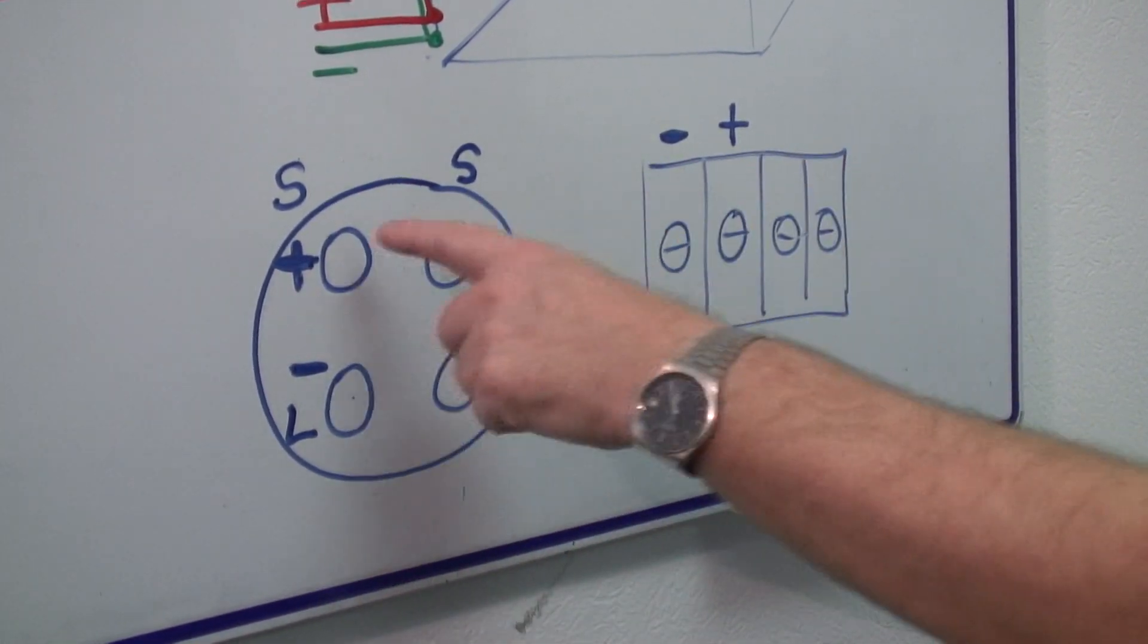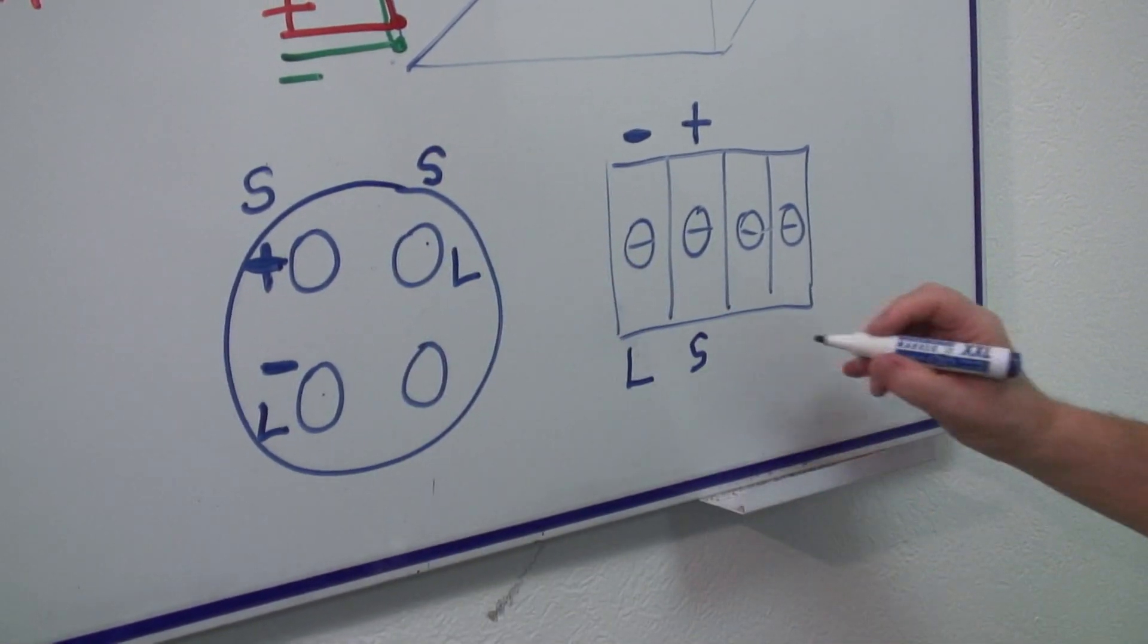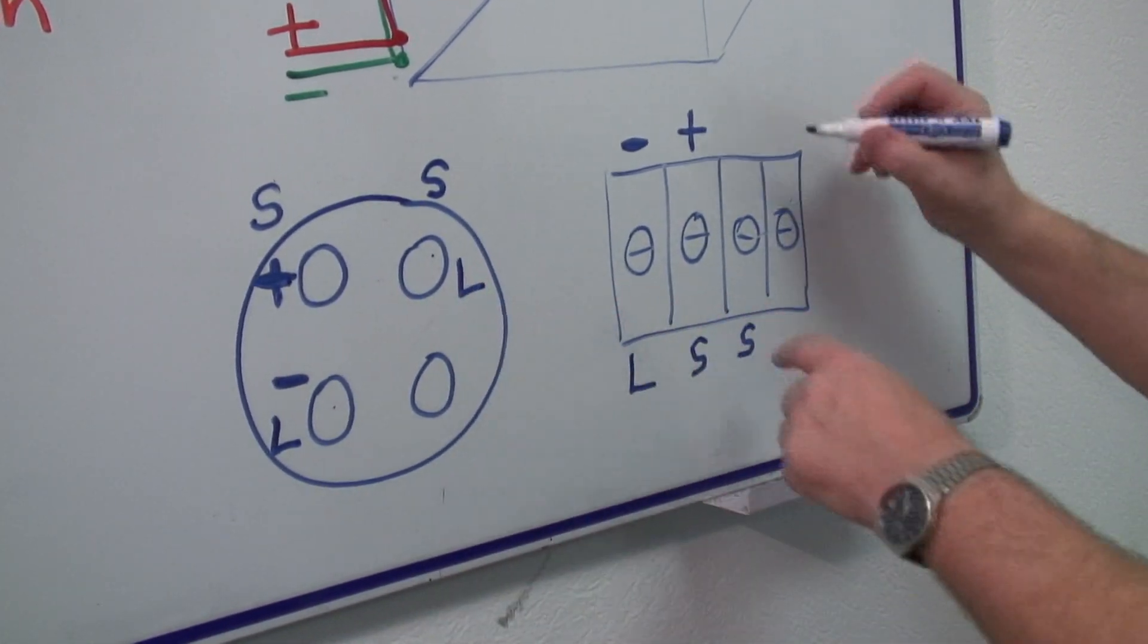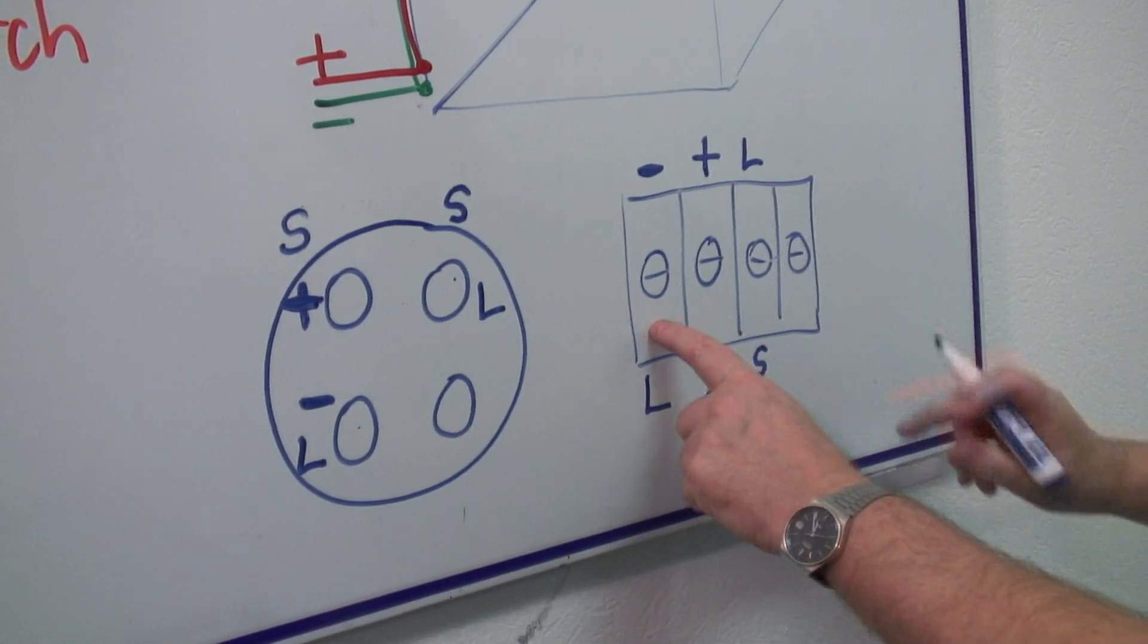The switch is connected to the positive. So, that's the positive and the switch. The other side of the switch is connected to that one, and it's also connected to that.